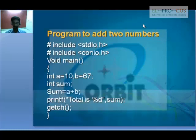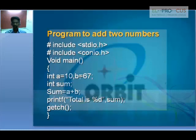This is a program to add two numbers. Including stdio.h for printf and scanf functions, and conio.h for getch and clrscr. In the main function, int a = 10 and b = 67. Another integer variable holds the sum: sum = a + b. Printf 'total is %d', sum — this gives you the addition of 67 and 10 which is 77.